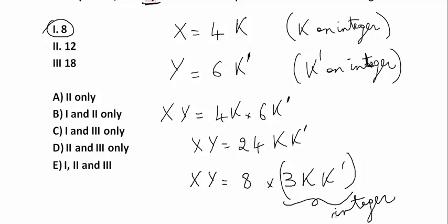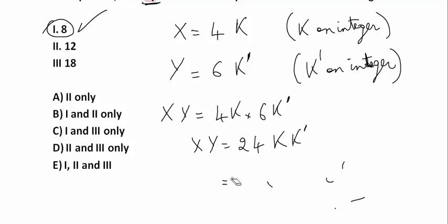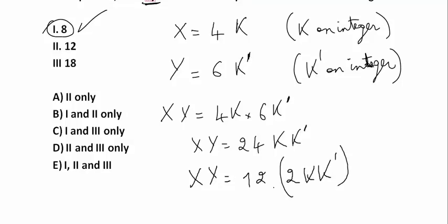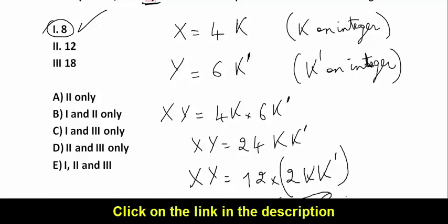It can be written like this because 24 is 8 times 3. So x times y is a multiple of 8 because it can be written in the form 8 times an integer — this is correct. Let us try 12. The same here — we can write x times y equal to 12 times 2 times k times k prime, so it's 12 times an integer. So x times y is a multiple of 12.